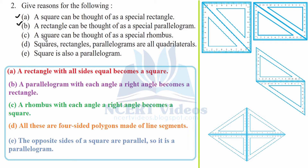Part C - a square can be thought of as a special rhombus. A rhombus with each angle as a right angle becomes a square. If we push the rhombus to change its angles to 90 degrees, the rest of the properties remain the same as a rhombus. Therefore, a rhombus with each angle turning to a right angle becomes a square.